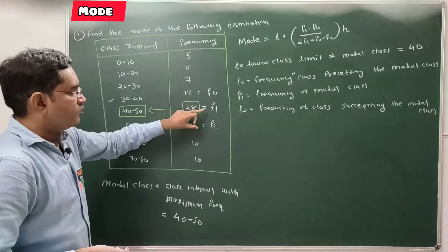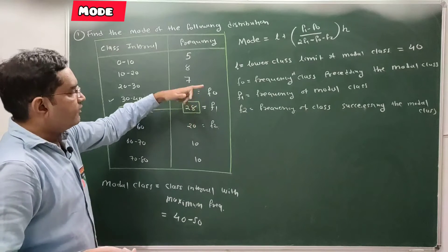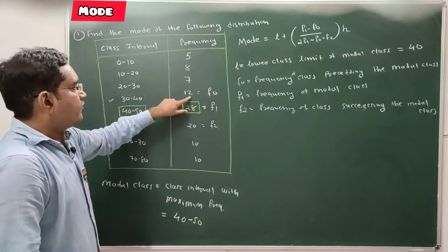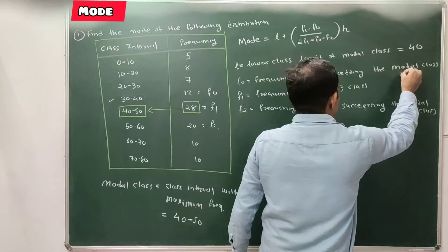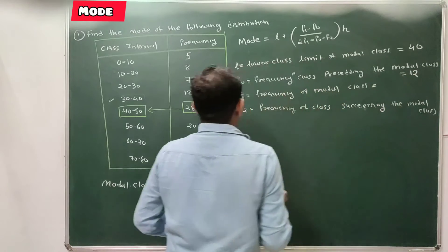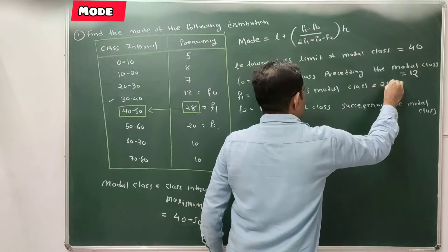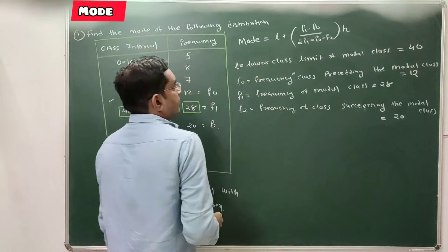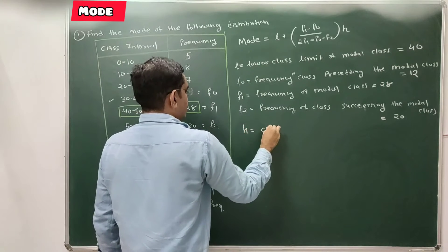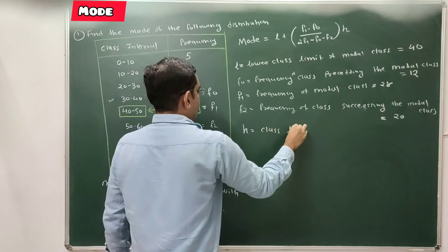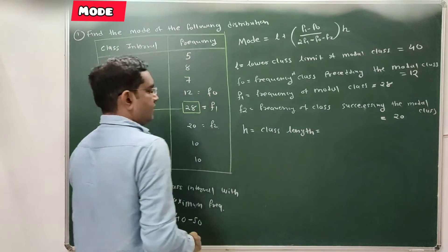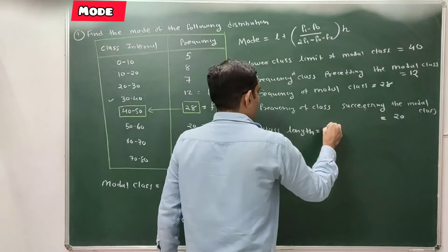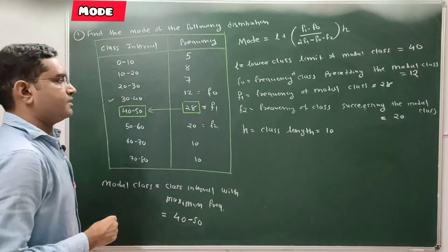The frequency before the modal class is f0, and the frequency after it is f2. So the value of f0 is 12, f1 is 28, and f2 is 20. Class length h is equal to 10, assuming all class intervals are of equal length.